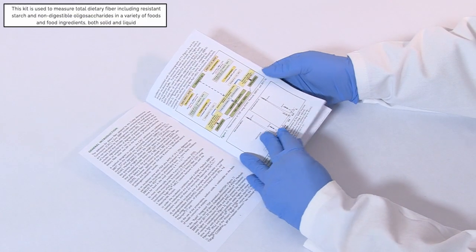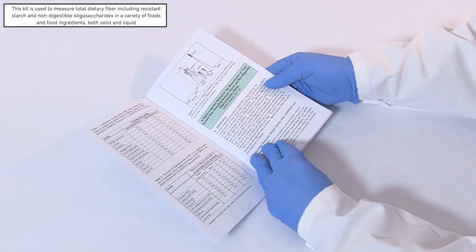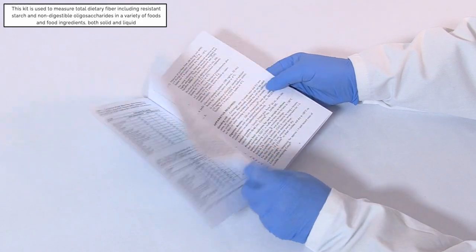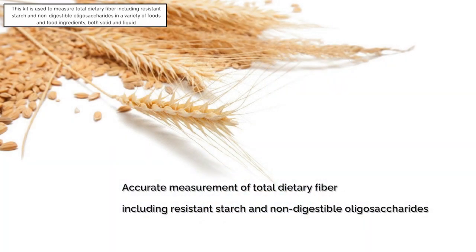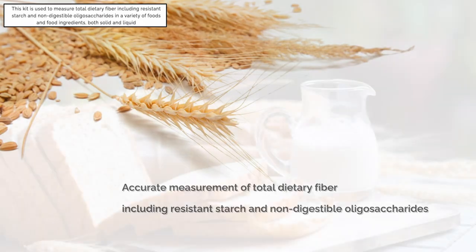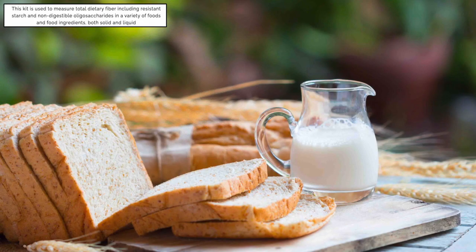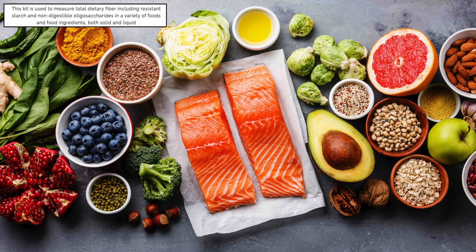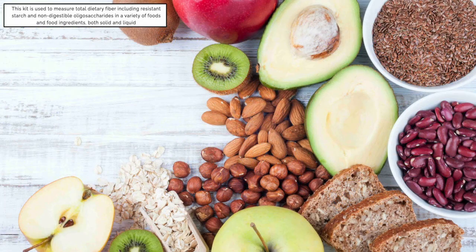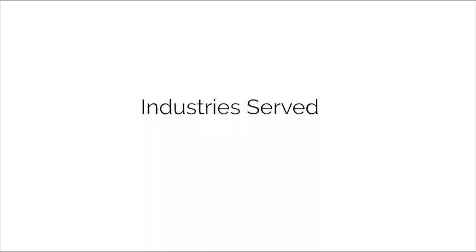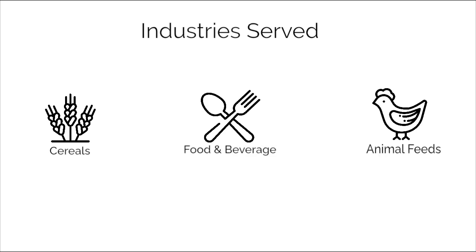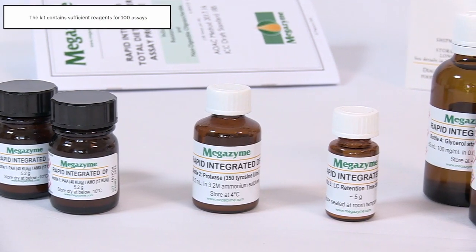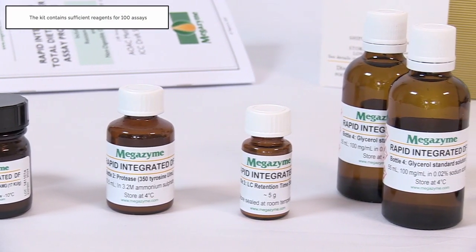The method described in the Megazyme Rapid Integrated Total Dietary Fibre Booklet allows accurate measurement of total dietary fibre, including resistant starch and non-digestible oligosaccharides, in a variety of foods and food ingredients, both solid and liquid. This method is applicable to a variety of industries, including cereals, food and beverage, and animal feeds. The kit contains sufficient reagents for 100 assays.